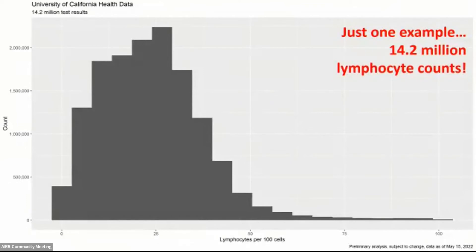Just as one example: we have 14.2 million lymphocyte counts. These are lymphocytes per 100 cells, supposed to range between 0 and 800 — and it's not a normal distribution; it's a very interesting shape. We have millions of measurements for virtually every blood test. We start with identifiable data including latitude and longitude of home addresses for care improvement, then de-identify for research. We can map patients to U.S. census tracts to understand social determinants of health — diet, unemployment rates, area deprivation, social vulnerability.